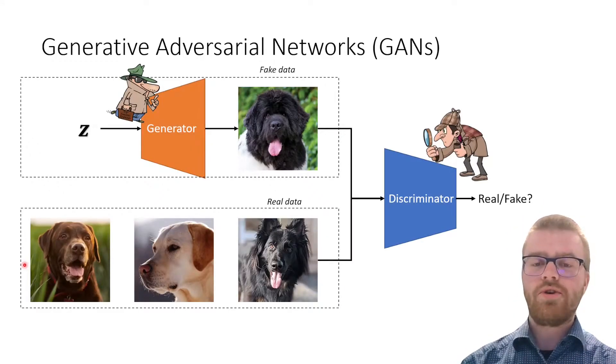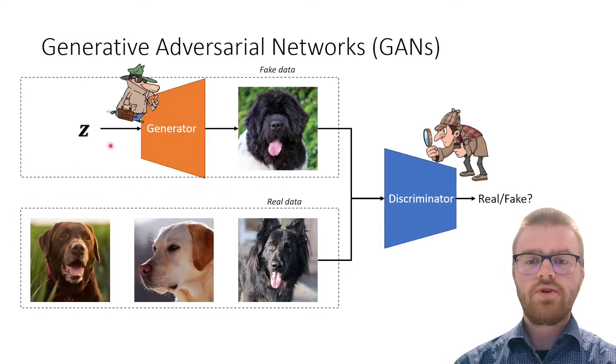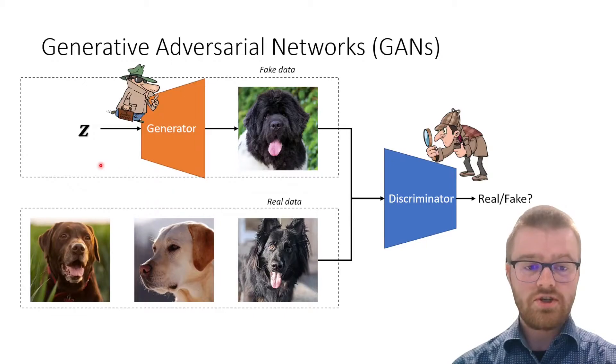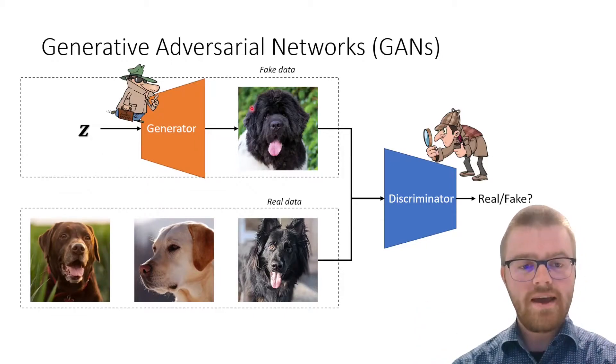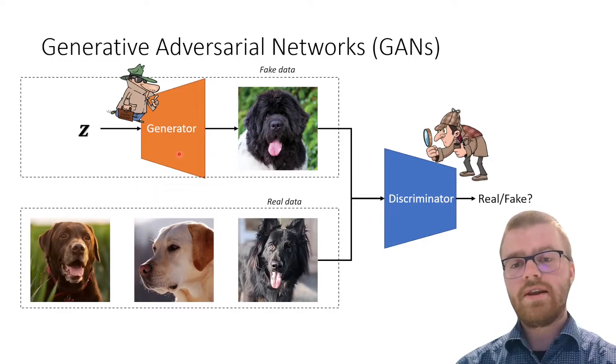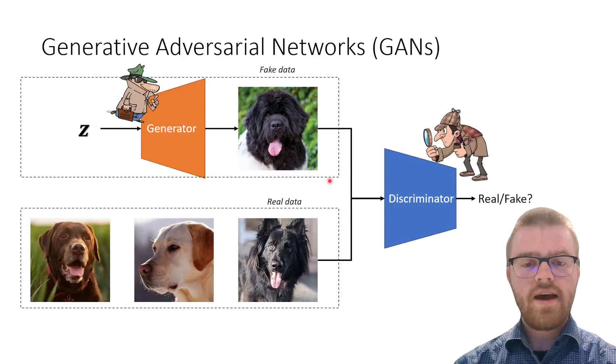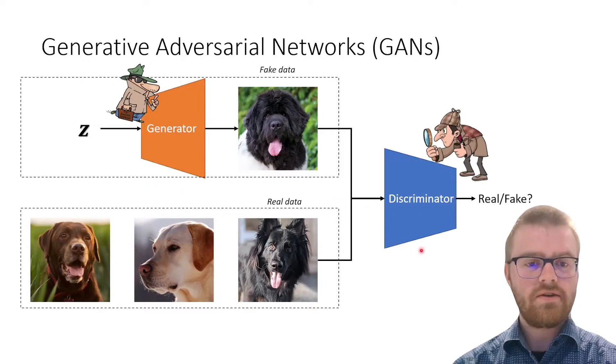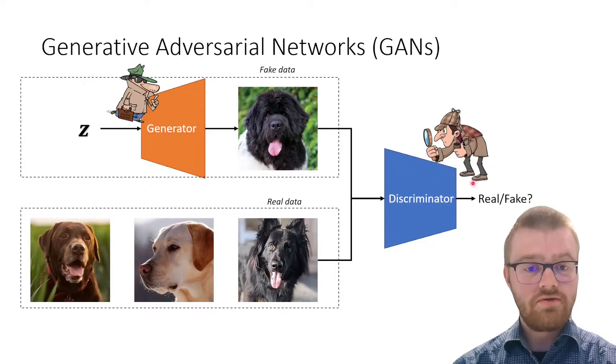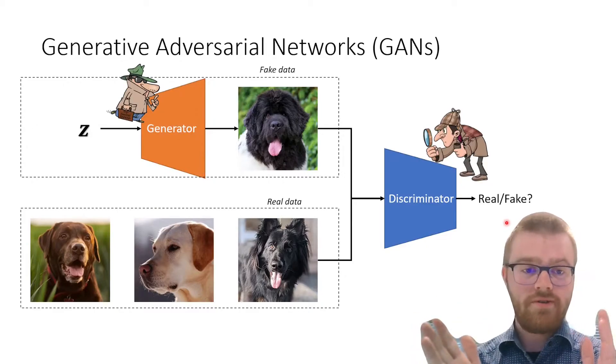Over here I show an overview of what a GAN looks like. On top I show the generator, which takes a latent code Z, which is random noise, and generates fake data using that latent noise. We will then intermingle this fake data between real data and show it to a discriminator network. And this discriminator network is going to classify images as either real or fake.